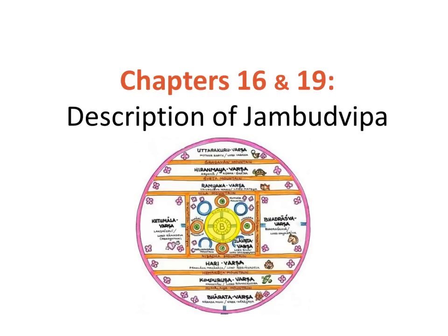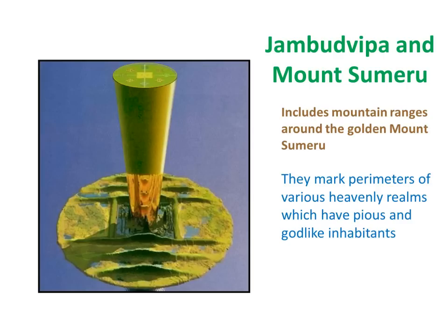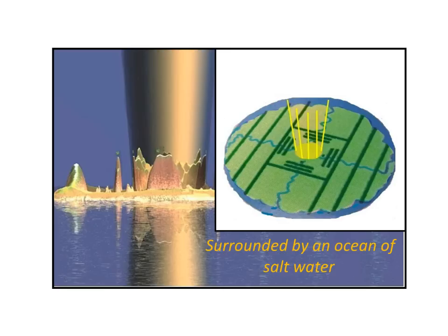So that leads us nicely on to chapters 16 and 19, Description of Jambodvip. Essentially, Jambodvip and Mount Meru is a huge singular island with mountains, and in the centre is this cone-like huge structure called Mount Meru. It includes mountain ranges that surround the Golden Mountain. They mark the perimeters of various heavenly realms, which have pious and god-like inhabitants. And to the south, there is also Bharat Vash, which often means ancient Greater India, or sometimes the whole Earth itself. This Jambodvip, looking at it from the side, we see it is surrounded by an ocean of salt water. And here's a topological map of Jambodvip, with the black lines showing the mountain ranges, and the blue lines representing the rivers.